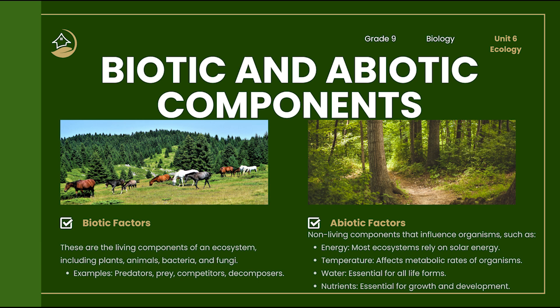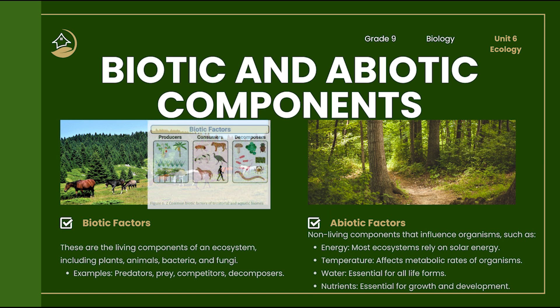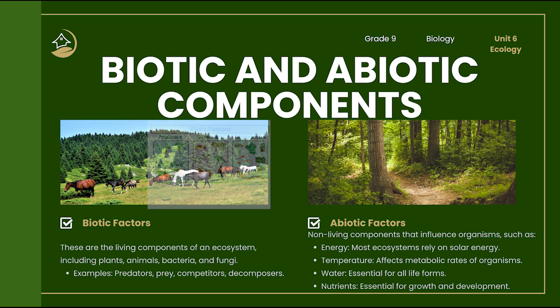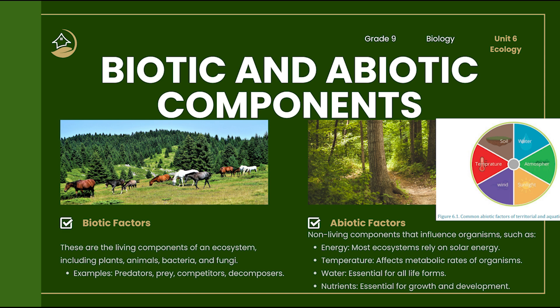Ecosystems are shaped by two types of components. Biotic factors are the living parts. Examples include predators like lions, prey like antelopes, decomposers like fungi and bacteria, and competitors — organisms that fight for the same resource. Whereas abiotic factors are the non-living parts that influence living things. Examples include sunlight, temperature, water, and nutrients.